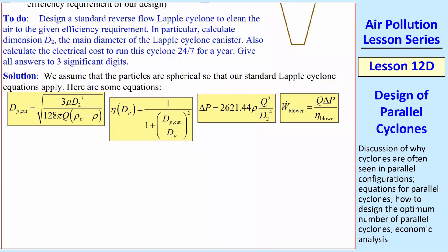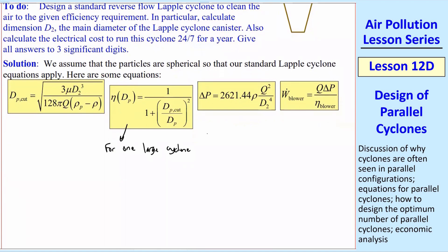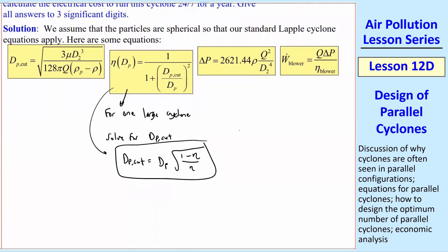The first thing I'm going to do is take this equation, and I'm going to analyze this now for one large cyclone. As I said, I'll repeat this for several cyclones required to do the job. Let's solve this for dpcut, because we don't know that. dpcut is the variable that we want to solve for from this equation, and that turns out to be - you can do some algebra - dpcut is equal to dp for any given particle, times square root of 1 minus eta over eta. And here, our requirement is that at dp equal 2.5 microns, eta of this dp is 80%, or 0.80.